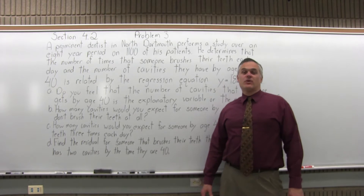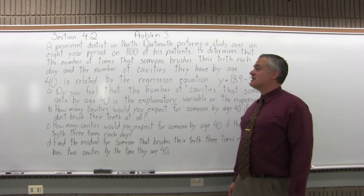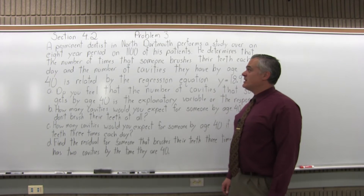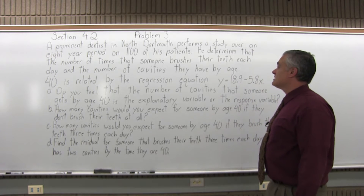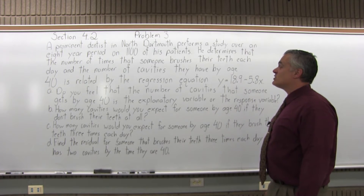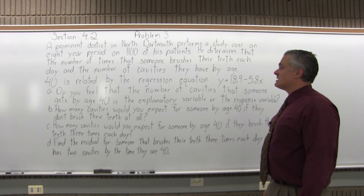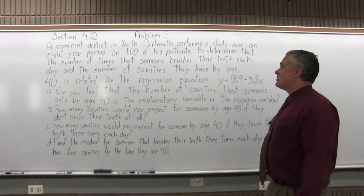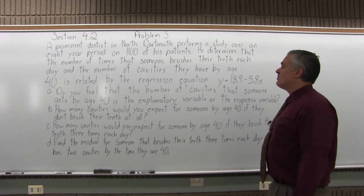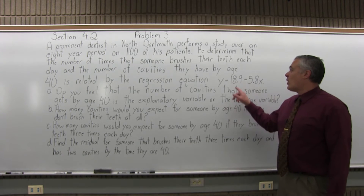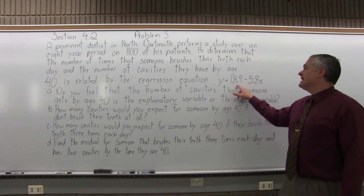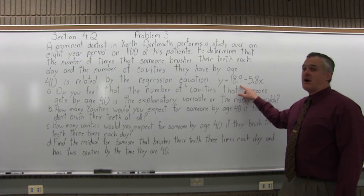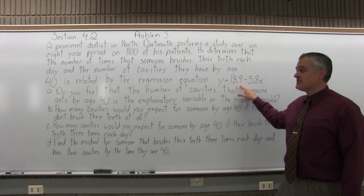This is Section 4.2, Problem 3. It says: a prominent dentist in North Dartmouth performs a study over a period of eight years on 1,100 of his patients. He determines that the number of times someone brushes their teeth each day and the number of cavities they have by age 40 is related by the regression equation y equals 18.9 minus 5.8x.